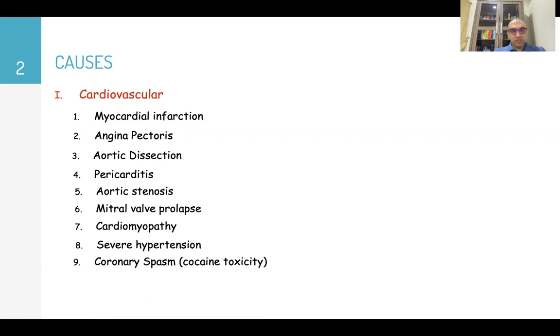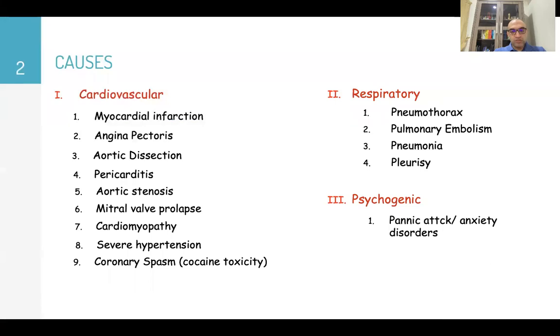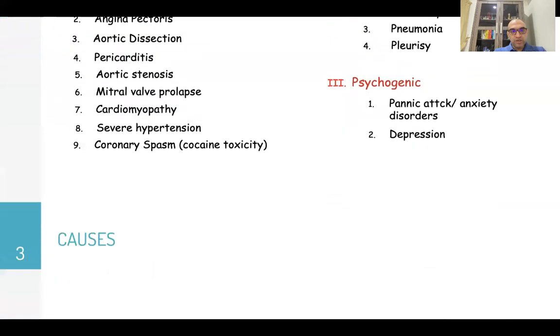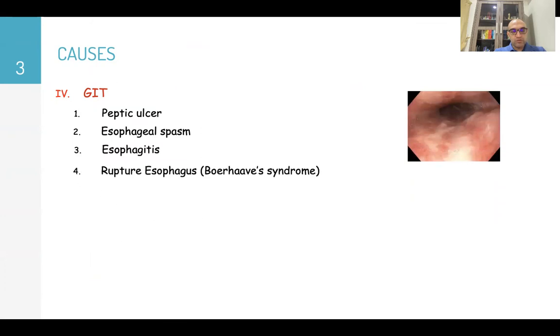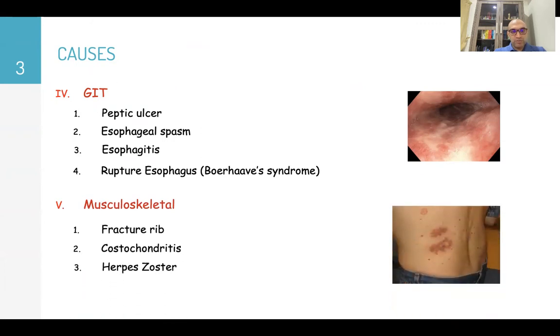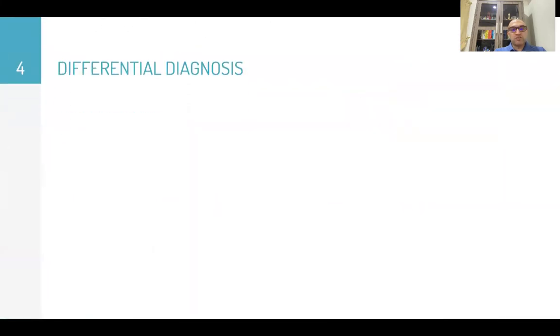Other than cardiovascular causes, there are respiratory causes which are important also like pneumothorax, pulmonary embolism, pneumonia, and pleurisy. Psychogenic causes are exclusion causes like panic attack or anxiety or even depression. Other causes like GIT causes like peptic ulcer disease or esophageal spasm, esophagitis or esophageal tear or rupture. Musculoskeletal causes or localized causes like fracture ribs, costochondritis, or even herpes zoster.